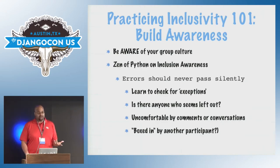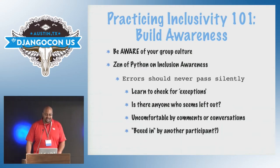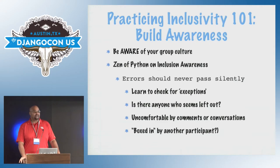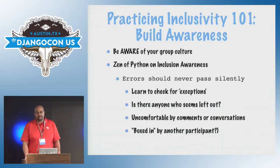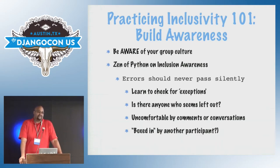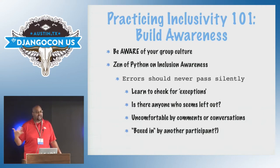If you look at the Zen of Python, one of the things it says is that errors should never pass silently. That's one of the things that happens if you don't have an inclusive culture. If someone comes to your meetup or code challenge, arrives and feels 'I'm not comfortable here' — they're not going to file a bug report. They're not going to write you a nice letter. They'll just go away and you'll never see them again. Then you'll wonder why there aren't a lot of women or people of color at your events. The error will pass silently.